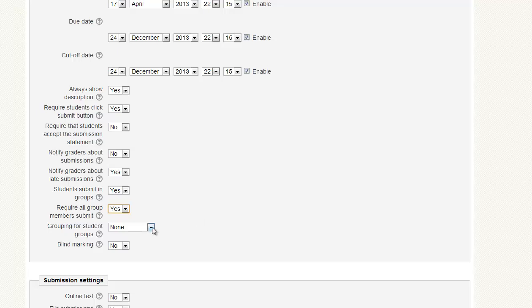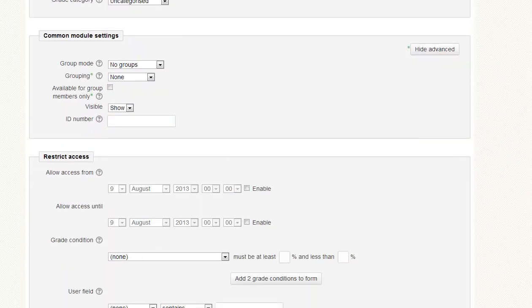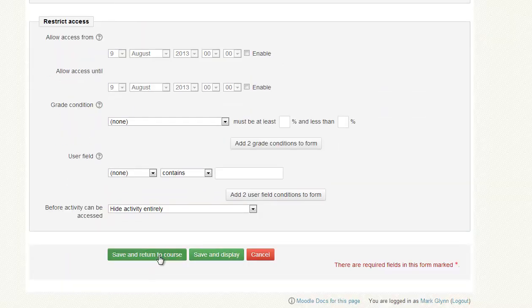The grouping for the student is the key one. What groups are we going to use? We're going to do it for assignment 1. And then we scroll down and click Save Changes.